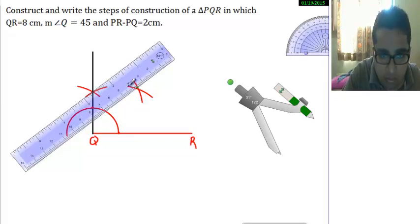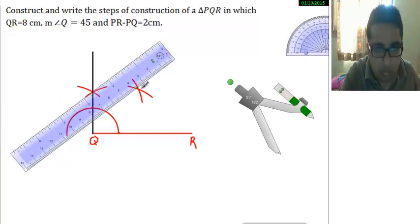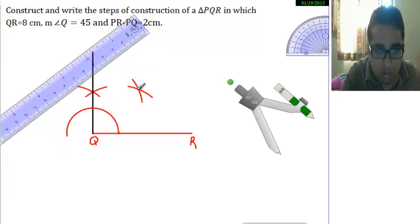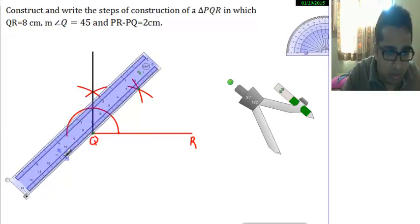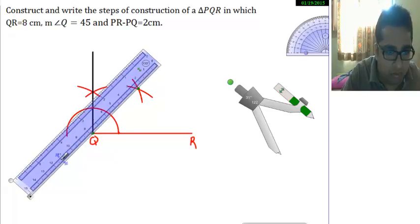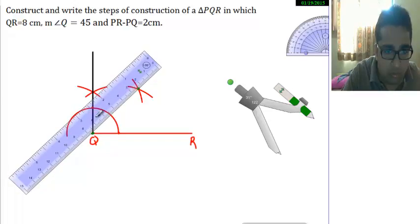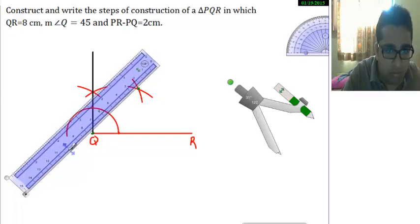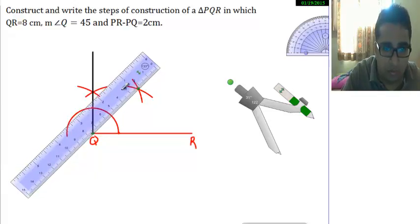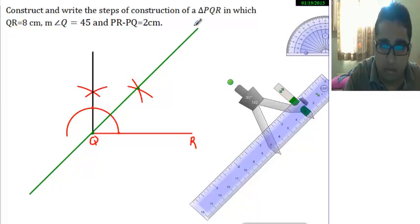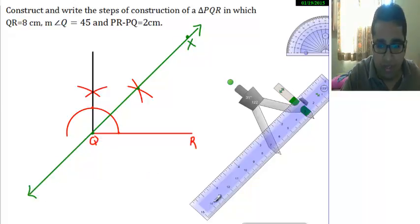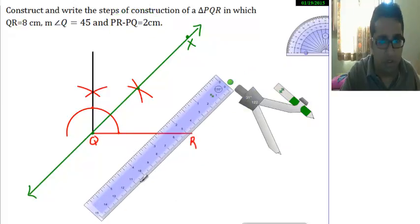This is the center here, and this is the center here, and this is the straight line — it should not turn anywhere. Put your scale like this. This seems perfect — this center and this center — and draw a long line. Let me name this point X. The difference we need is 2, so I will take the measurement of 2 on my scale.